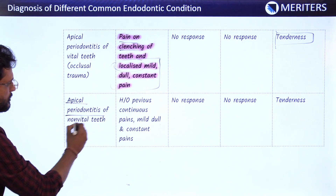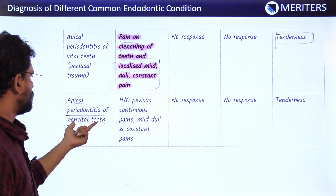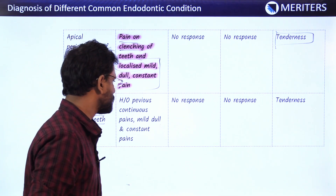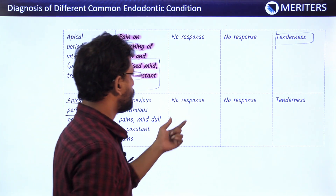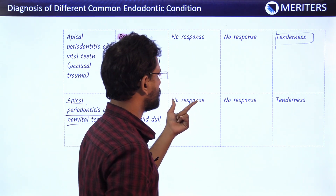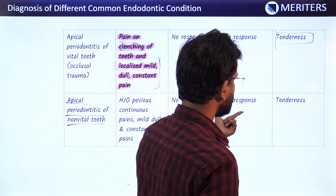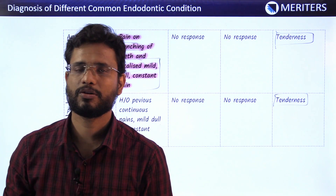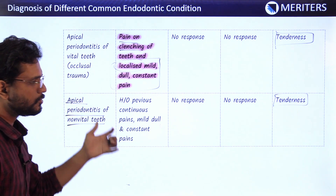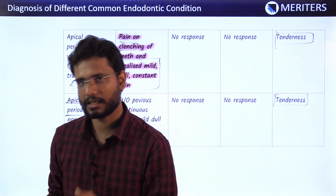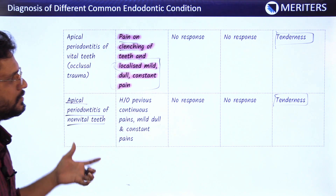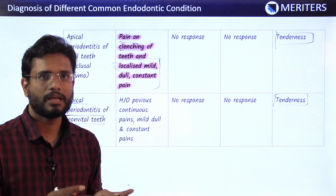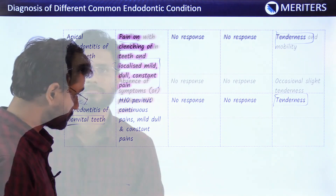In apical periodontitis of non-vital teeth, the tooth has become non-vital. There will be a history of previous continuous pains, mild dull and constant pain, no response to the thermal test, and no response to the electrical pulp test. However, there will be tenderness to percussion due to the inflammation of the periodontal ligament. All these pathologies — from normal pulp to reversible pulpitis to irreversible pulpitis and then periapical pathologies — are increasing in sequence and are time-dependent.